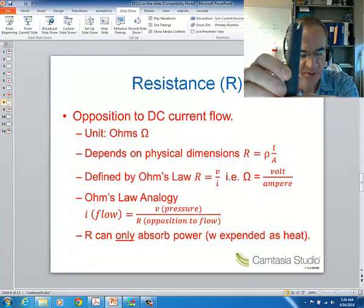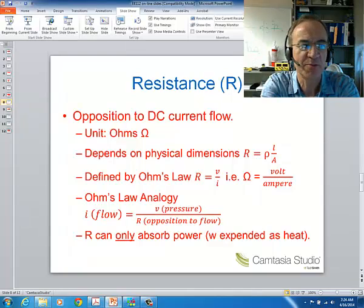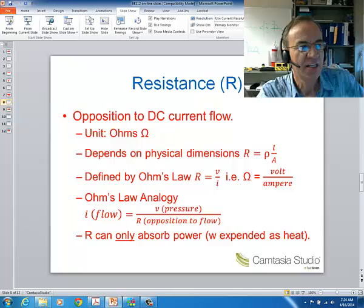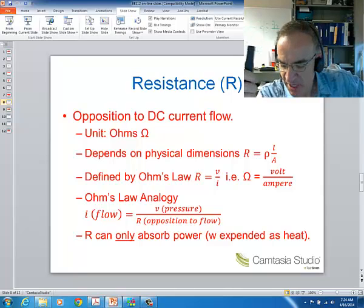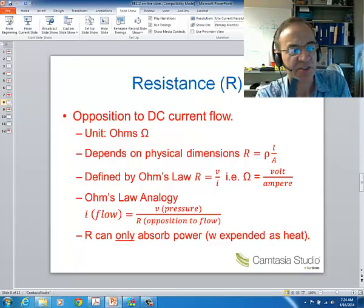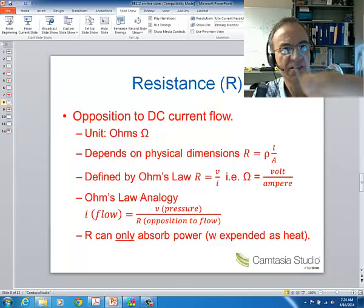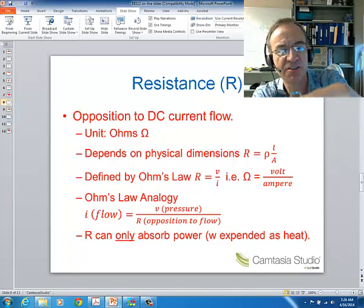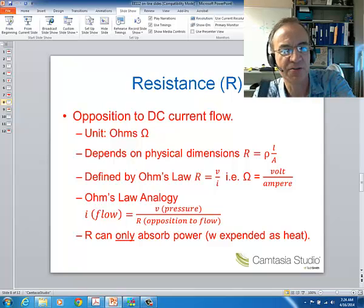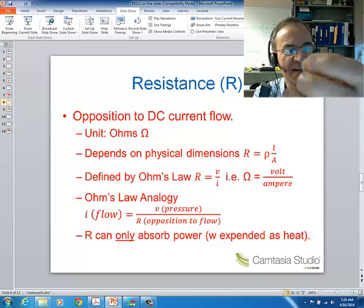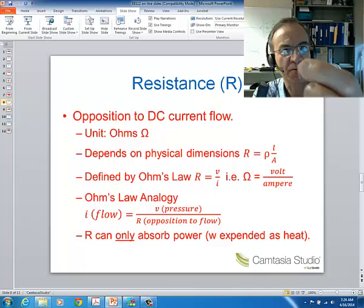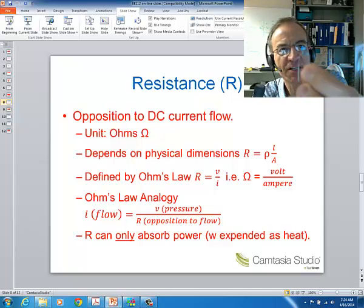But remember, in a previous lecture, we talked about power rating, which is the maximum amount of power that a component can withstand. Resistors have power ratings. This small one is a quarter-watt resistor. If you take the voltage across it and the current through it and you do your V times I, you've got to make sure that there's not more than a quarter of a watt. Otherwise, this resistor could be physically harmed.